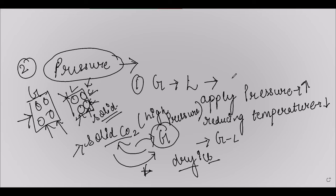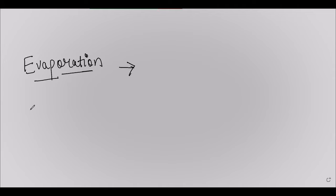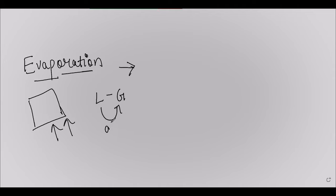Similarly, we have evaporation — where liquid state converts into gaseous state at any temperature below its boiling point. Evaporation is a process in which the conversion of a substance from liquid state into gaseous state occurs at any temperature. For example, wet clothes dry under the sun even at 35 or 40°C, well below the boiling point of water.